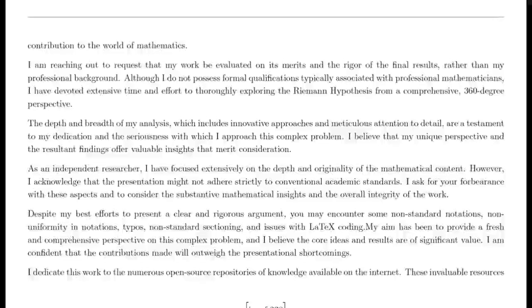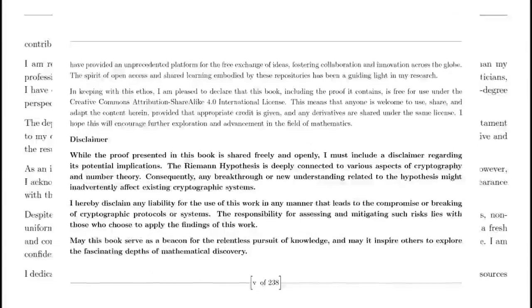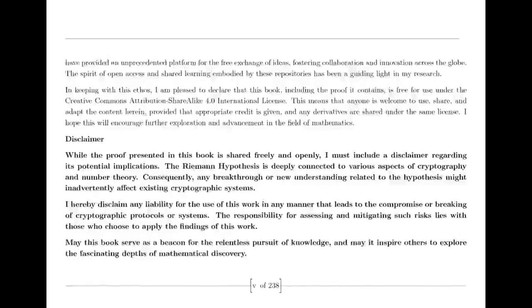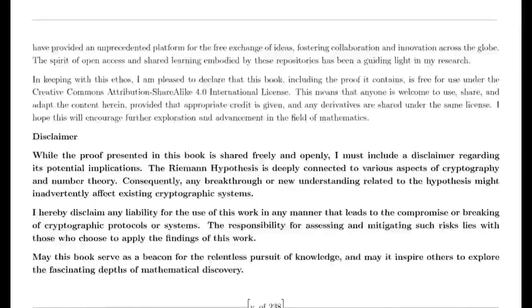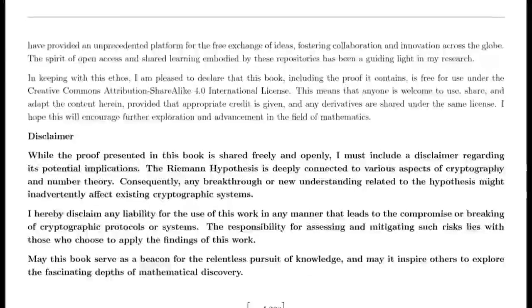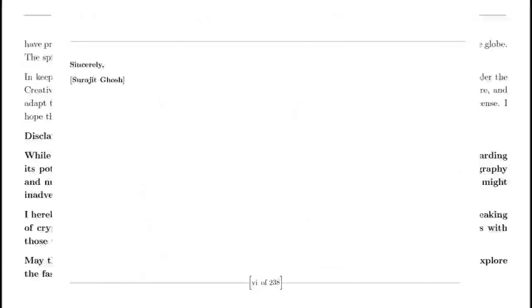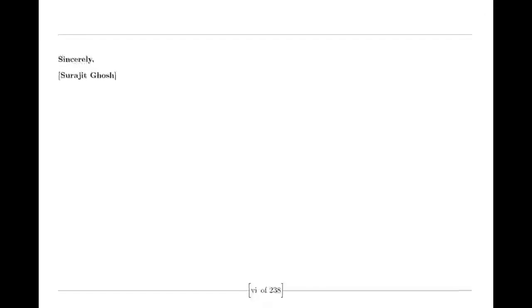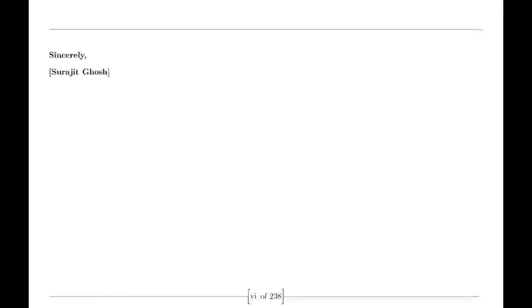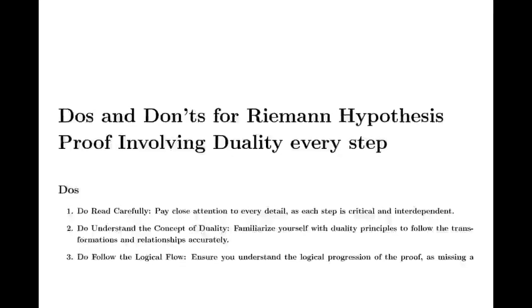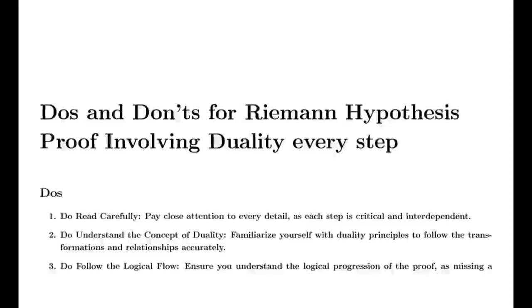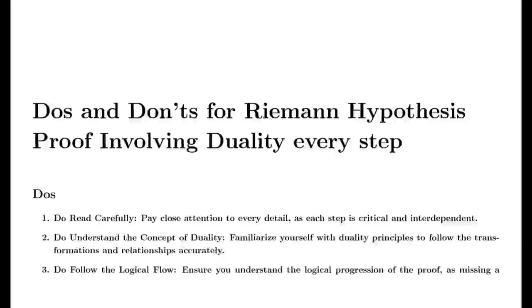Fast forward to the early 19th century, when another mathematician, Bernhard Riemann, took Euler's work and breathed new life into it. In a groundbreaking paper, Riemann extended the concept beyond the realm of real numbers, daring to imagine the zeta function in the complex plane. He proposed a connection between this enigmatic function and the distribution of primes, a revelation that sent ripples through the mathematical community.